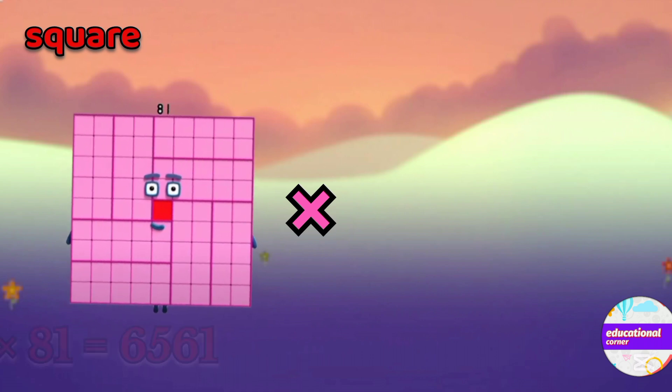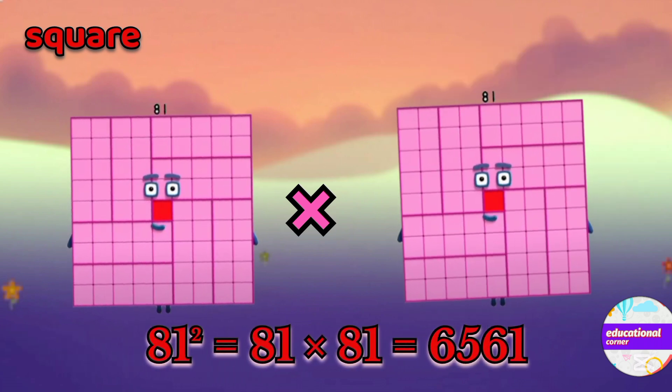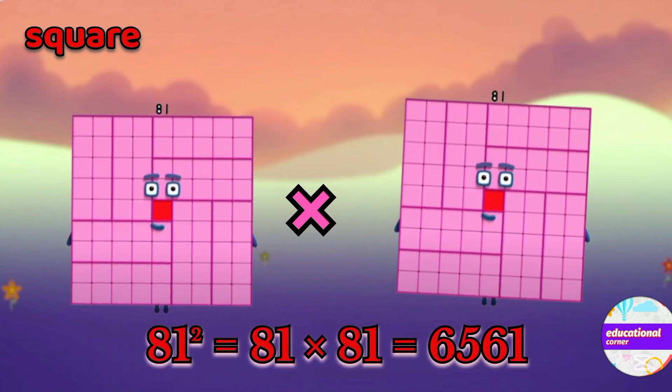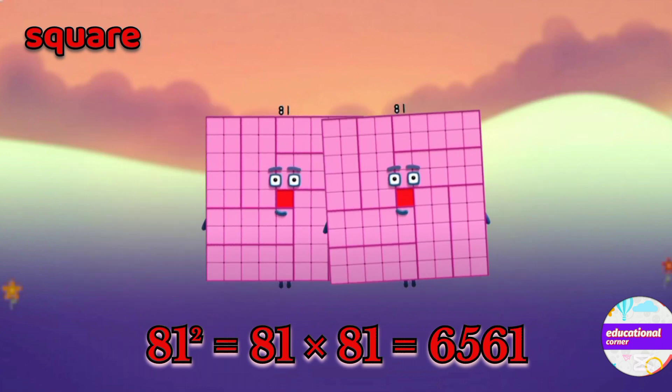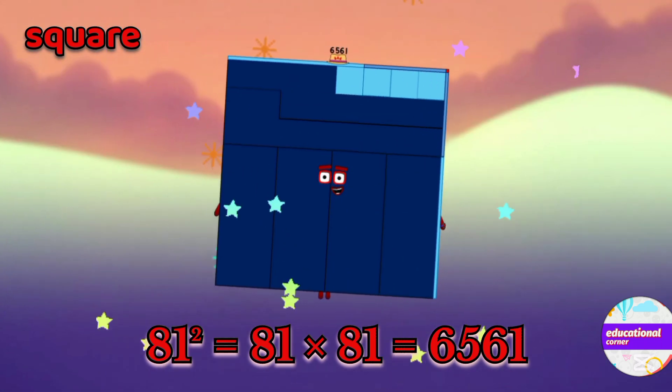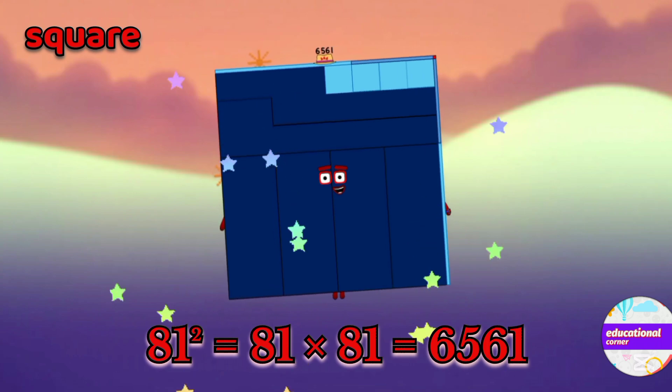81 multiply by 81. So the square of 81 is 6561.